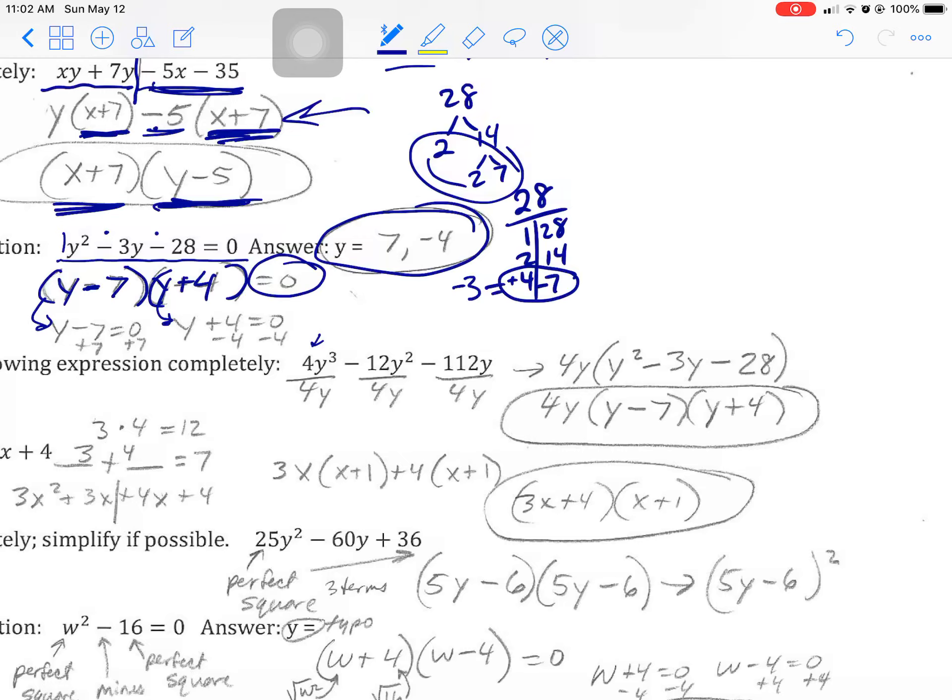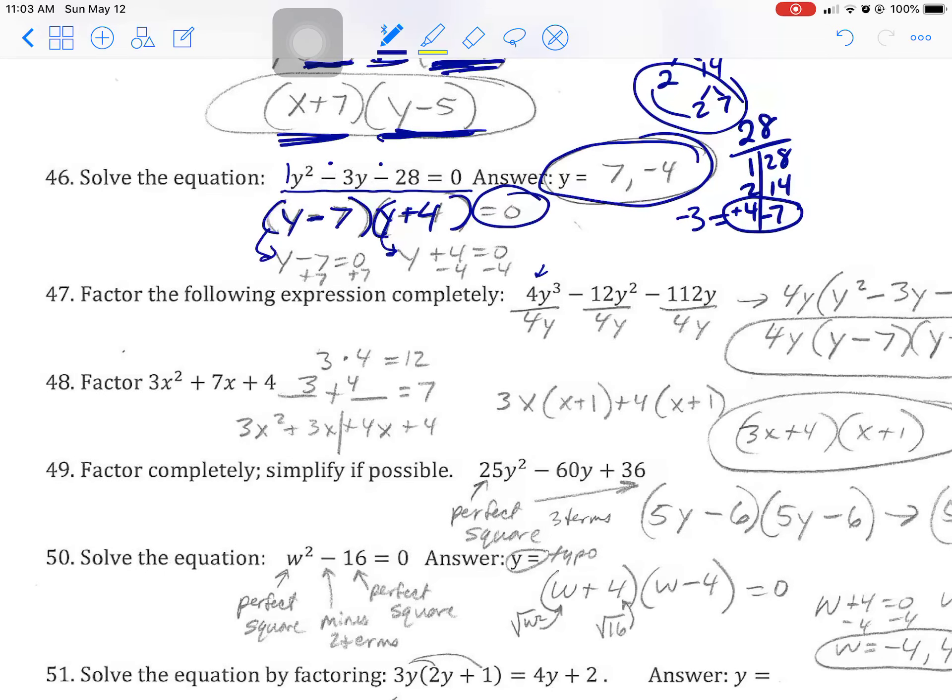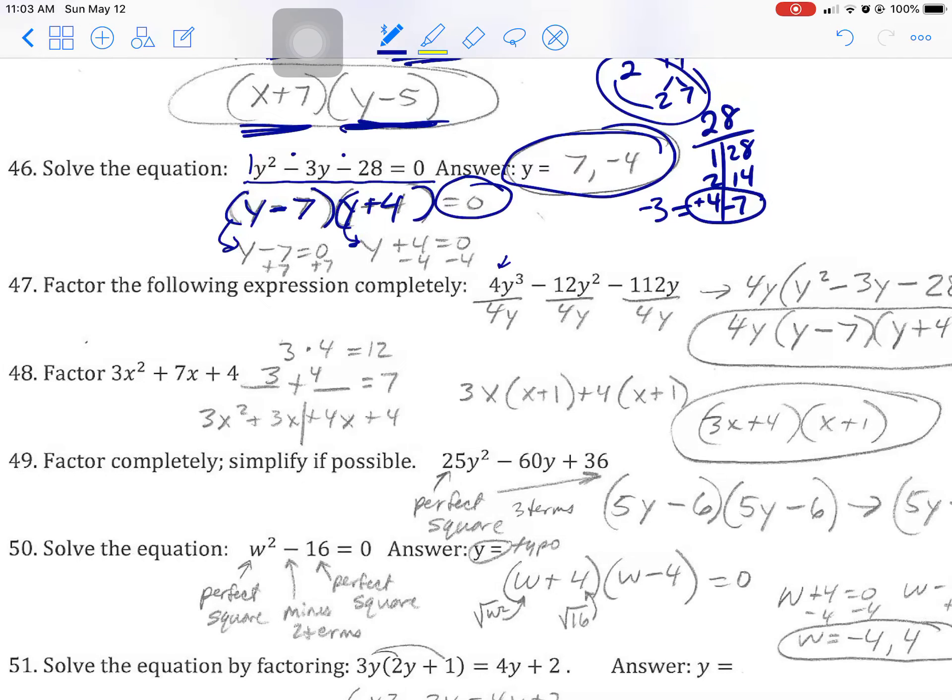You want to do that so you're not factoring with too large a number. So take the 4y out and save that. That has to be part of your answer. Then what's left, you have to see what's left so you know what you're factoring. Then I need factors of 28 that are 3 apart again. Is it the same one I just did? That is the same one I just did. So I'm good.